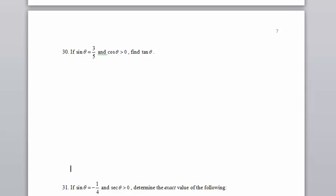Here we go, number 30. If the sine of theta is three-fifths and the cosine of theta is positive, find the tangent of theta. First thing we want to do is draw a picture of this.